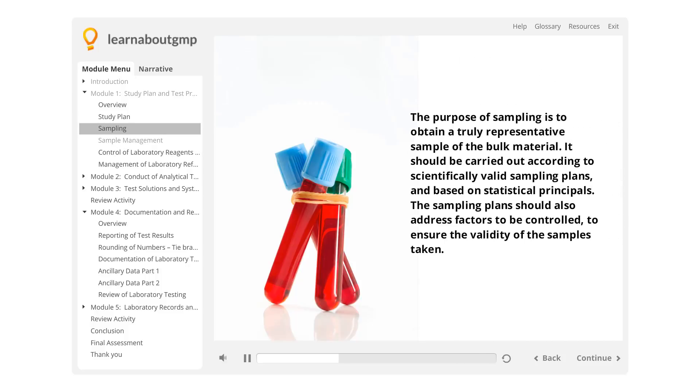The purpose of sampling is to obtain a truly representative sample of the bulk material. It should be carried out according to scientifically valid sampling plans and based on statistical principles. The sampling plans should also address factors to be controlled to ensure the validity of the samples taken.